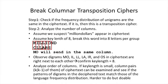Step one: check if the frequency distribution of the unigrams is the same as in the ciphertext. If it is, then it is likely a transposition cipher.